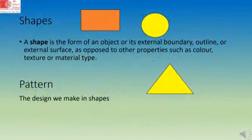Let's start with the definition of shape. Shape is a form of an object or its external boundary, outline or external surface, as opposed to other properties such as colors, texture or material type. Pattern: the design we make in shapes.